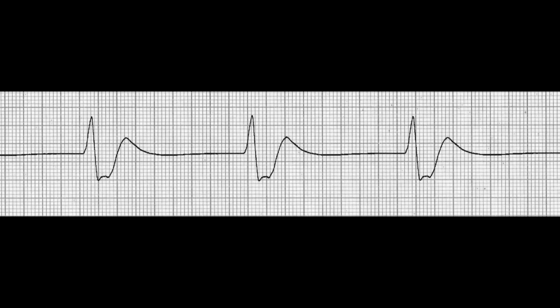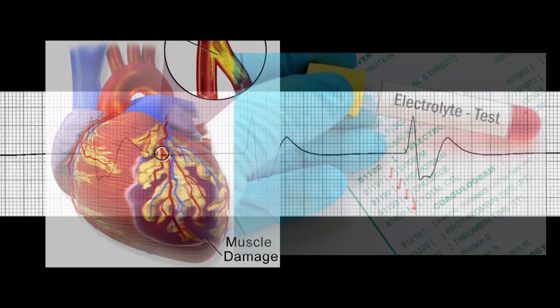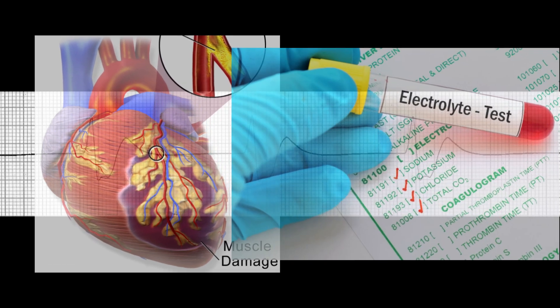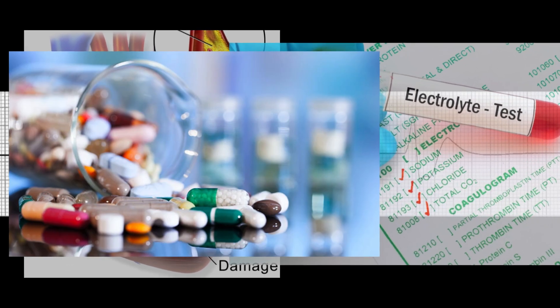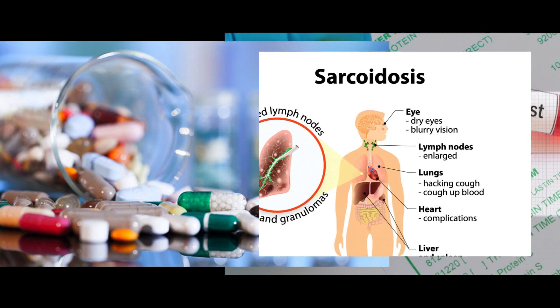There are several possible causes of idioventricular rhythm, including acute myocardial infarction, electrolyte imbalances, drug toxicity, and degenerative disease of the conduction system.